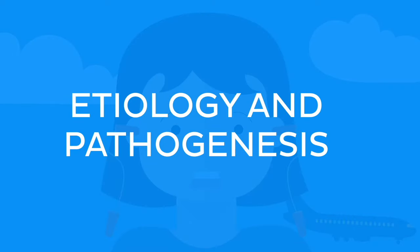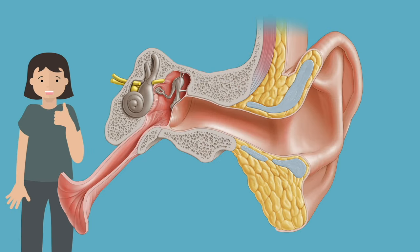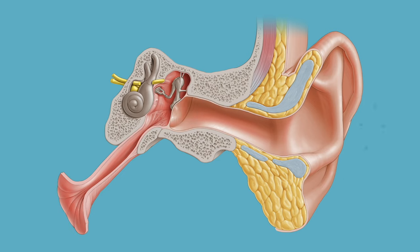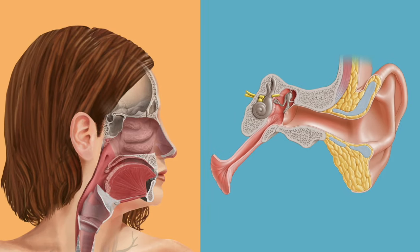So the Eustachian tube is very helpful. However, even though it helps us preserve our hearing, this tube also provides an anatomical passage for pathogens into the middle ear. In fact, acute otitis media usually follows an infection of the nasal mucosa, nasopharynx, middle ear mucosa, or Eustachian tube.